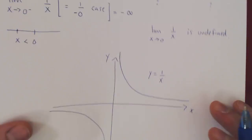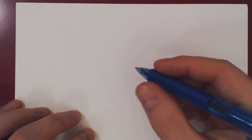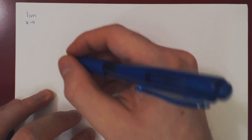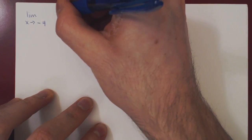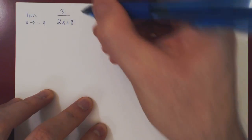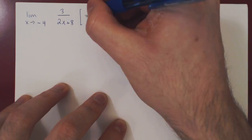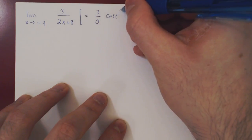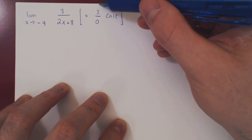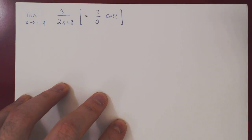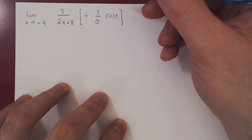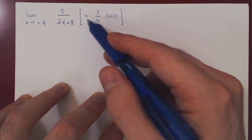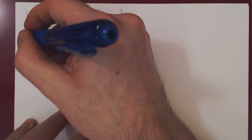Let's look at two more examples. Let's approach negative 4 and take 3 over 2x plus 8. As x approaches -4, we get 3 over 2(-4) + 8 = 3 over 0. The question is: will this be positive infinity, negative infinity, or neither? Since 3 over something small will be very big but the sign is not clear, the only way to figure this out is by looking at the limit from the left and from the right.